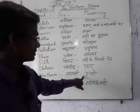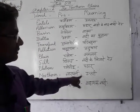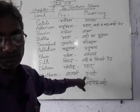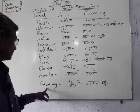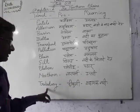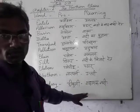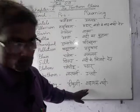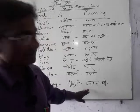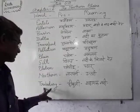Northern — उत्तरी, नॉर्थ से नॉर्थर्न. Tributary — सहायक नदी, नदियों के साथ जो नदियां होती हैं, that is called tributary.